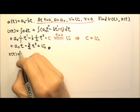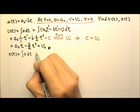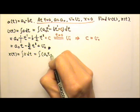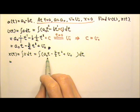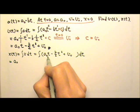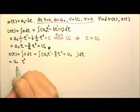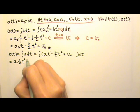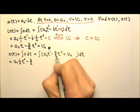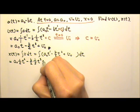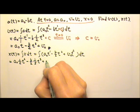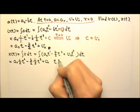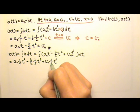Now let's find the position as a function of time, which means we integrate the velocity: ∫(a0·t − (b/2)·t² + v0) dt, done one term at a time. The constant a0 stays; integrating t to the first gives t squared, multiplied by 1 over 2. Then minus b over 2 is the constant coefficient; integrating t squared gives t cubed, multiplied by one third. Finally, v0 is v0 times t to the 0, so it stays, and integrating t to the 0 gives t to the first times 1 over 1.